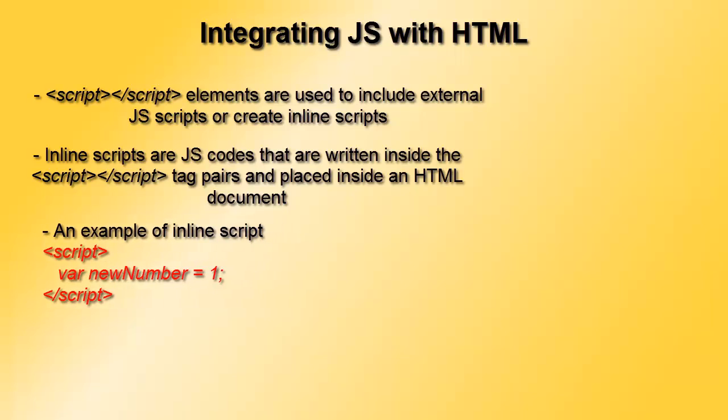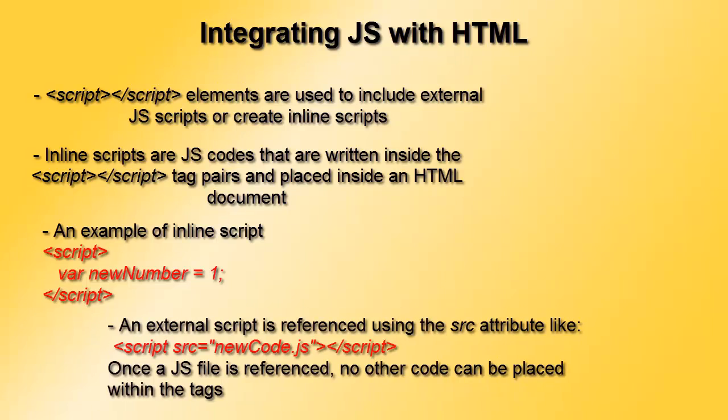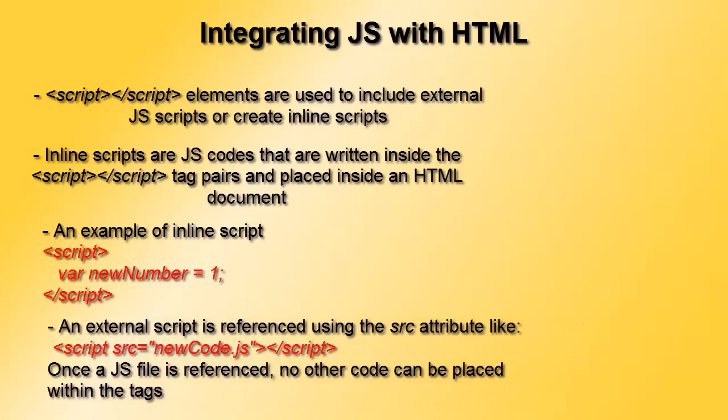We had already seen how to include our external JavaScript file inside our HTML document. We create a separate file with the .js extension and a new name, place all our JavaScript code inside that file, and reference it using our script element along with the src or source attribute.